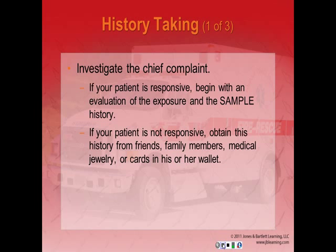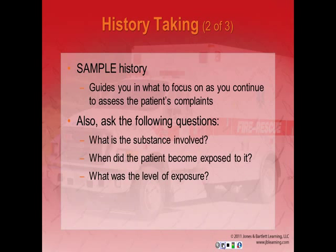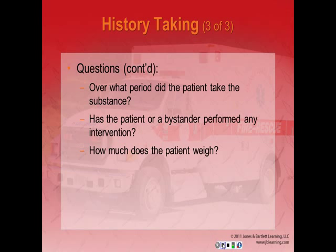Take your history: investigate the chief complaint and get the patient's medical history. If responsive, begin with evaluation of the exposure using the SAMPLE history. If not responsive, gather information from friends, family members, medical alert jewelry, or wallet cards. In addition to SAMPLE, ask: What substance was involved? When did the patient ingest or become exposed? How much did they ingest? Over what period? Have any interventions been performed? And how much does the patient weigh? — an important part of treating poisonings.